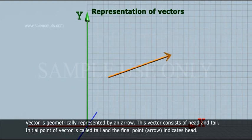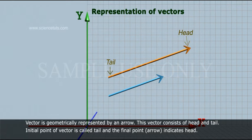A vector is geometrically represented by an arrow. This vector consists of head and tail. The initial point of the vector is called the tail, and the final point, the arrow, indicates the head.